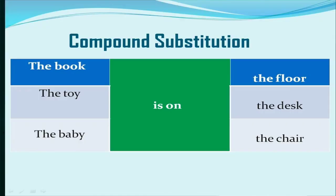Now let's study another type of substitution — compound substitution. As you can see on your screen, on the extreme left-hand side of the table there are words like 'the book,' 'the toy,' and 'the baby.' In the middle part is 'on,' and on the extreme right-hand side are words like 'the floor,' 'the desk,' and 'chair.' Here also it is like match-the-following, but in this case any word on the extreme left-hand side could be matched to any of the words on the extreme right-hand side.